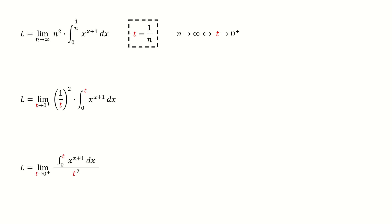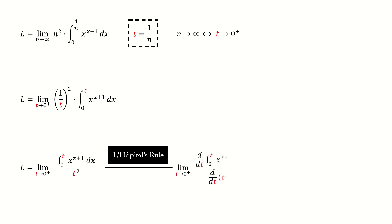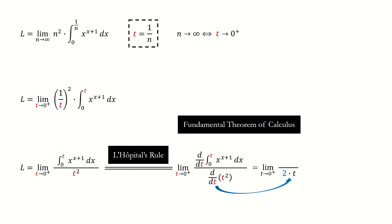Then we write it into a fraction. Because it's in the form of 0 over 0, we can use L'Hôpital's rule. So we take the derivative on both numerator and denominator. After taking the derivative, the denominator goes here. For the numerator, we use the fundamental theorem of calculus. So we got here.